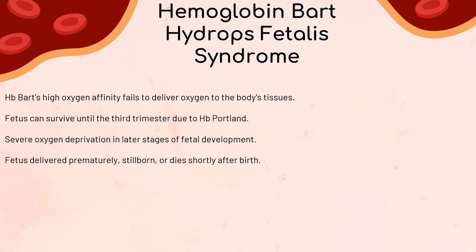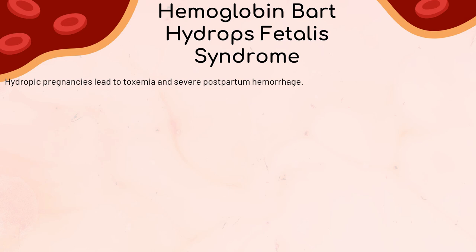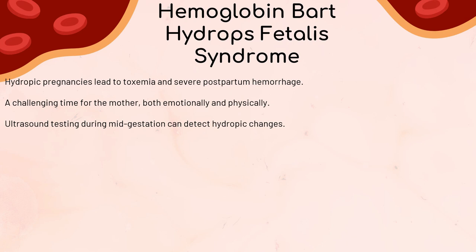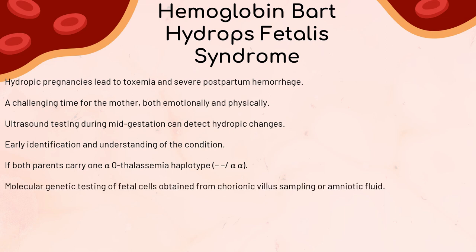Most often, the fetus is delivered prematurely and is either stillborn or dies shortly after birth. Apart from severe anemia, edema, and ascites, the fetus experiences significant enlargement of the liver, spleen, and heart. The blood shows severe microcytic hypochromic anemia, hemoglobin concentration of 3–8 g/dL, with many nucleated red blood cells in the peripheral blood. Hydropic pregnancies are dangerous for the mother too, leading to toxemia and severe postpartum hemorrhage. Ultrasound testing during mid-gestation can detect hydropic changes. If both parents carry one alpha-0 thalassemia haplotype (-- / alpha-alpha), prenatal diagnosis of homozygosity can be achieved through molecular genetic testing of fetal cells obtained from chorionic villus sampling or amniotic fluid, enabling early detection and informed decisions.